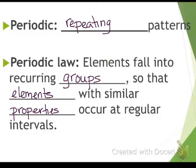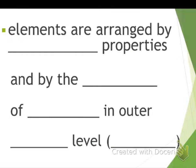That's how scientists back in the day discovered certain elements and put them where they are in the periodic table, based on their physical and chemical properties that repeated and made a pattern. So elements are arranged by chemical properties and by the number of electrons in the energy level.